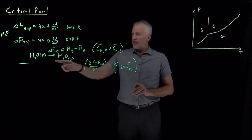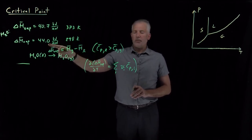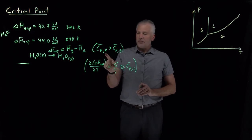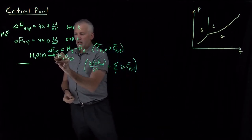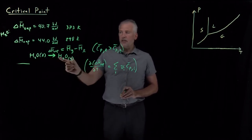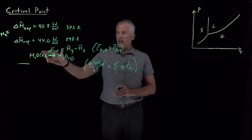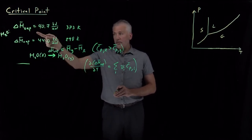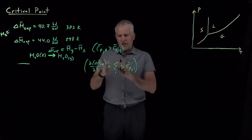Why does the enthalpy of vaporization drop as temperature increases — from 44 kJ/mol at 298 K down to about 41 kJ/mol at 373 K? Because the heat capacity of the liquid is larger than that of the gas, heating both reactants and products to 373 K costs more enthalpy for the liquid than for the vapor. So it doesn't cost as much additional enthalpy to convert the liquid to gas at the higher temperature.